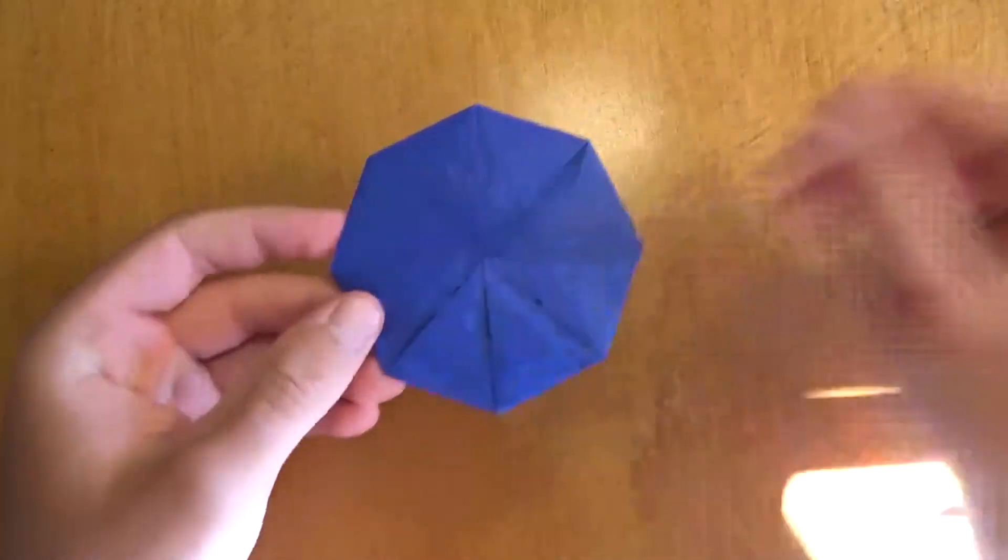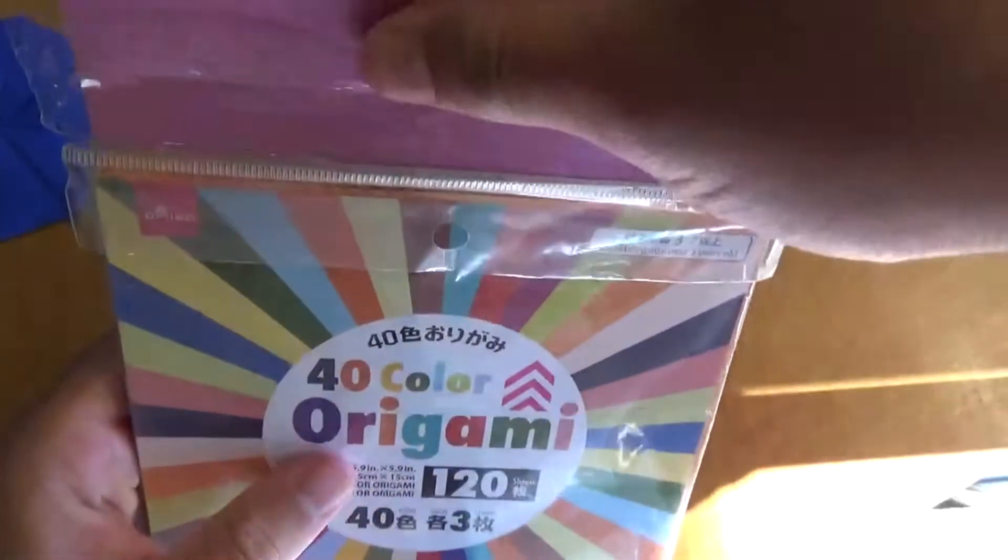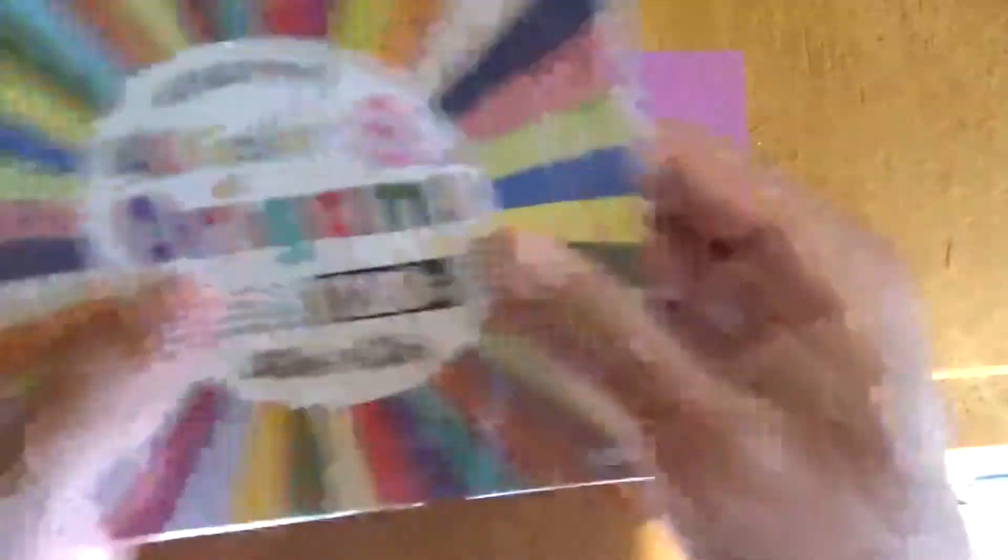Alright, want to learn how to fold it? Ready, set, here it goes. Alright, so for this model, I'm going to use a six-inch square of Kami, but you can use a sheet of printer paper cut square.